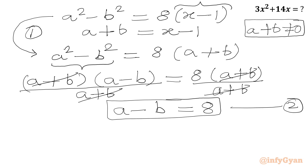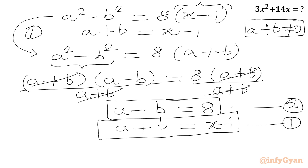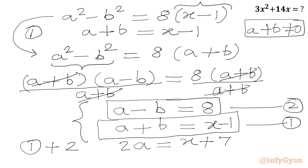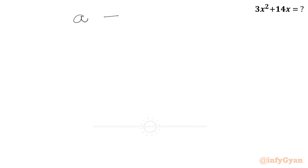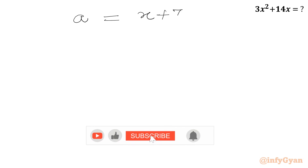We now have two equations: equation 1 is a + b = x - 1, and equation 2 is a - b = 8. Adding both equations gives 2a = x + 7. Dividing both sides by 2, we get a = (x + 7) / 2.